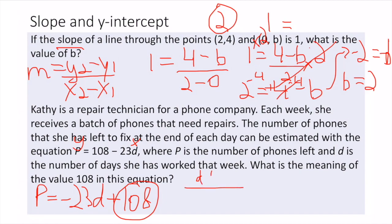If I plug in d = 0 into the equation, I would have p = -23 × 0 + 108, so p = 108. That means if she has not worked any days that week, she has 108 phones left to fix.